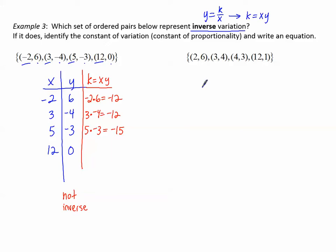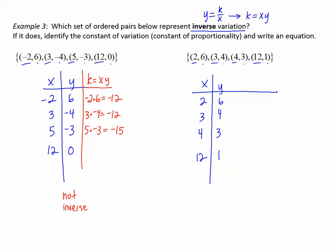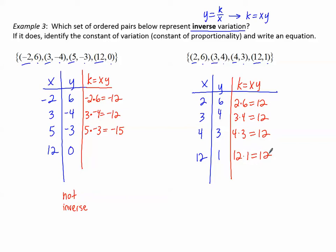Checking the last set of ordered pairs. Domain: two, three, four, twelve; range: six, four, three, one. Multiplying x times y: two times six is twelve, three times four is twelve, four times three is twelve, twelve times one is twelve — the same number every time. This one is inverse variation with a constant of variation of twelve, and the equation is y equals twelve divided by x.